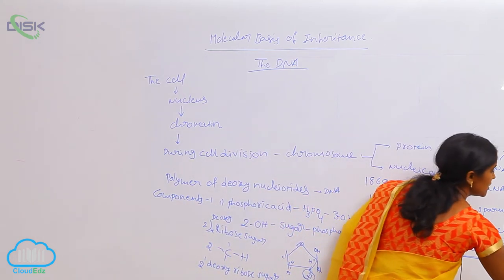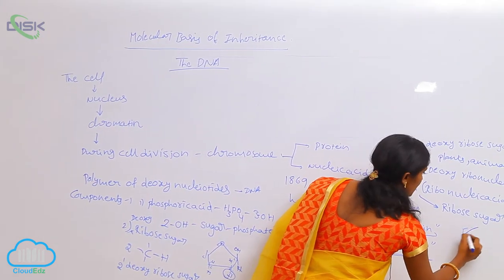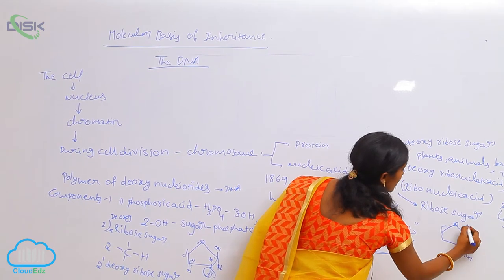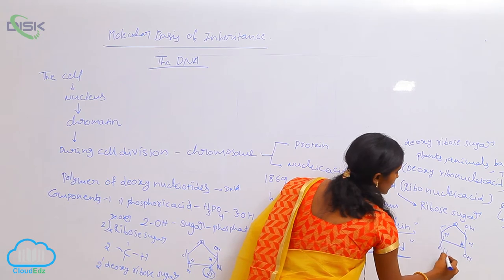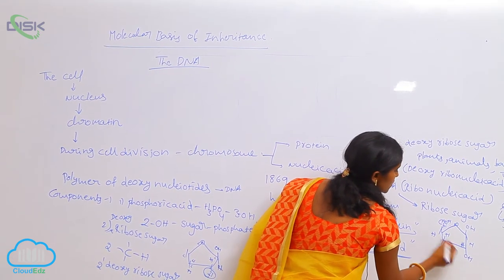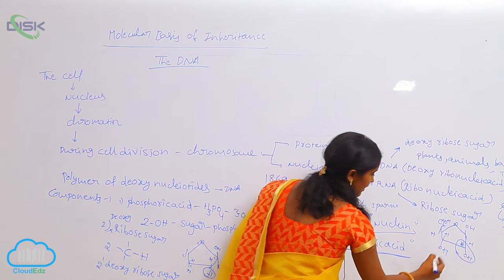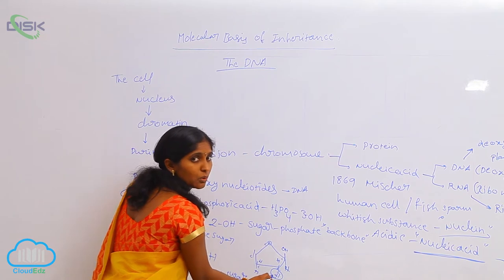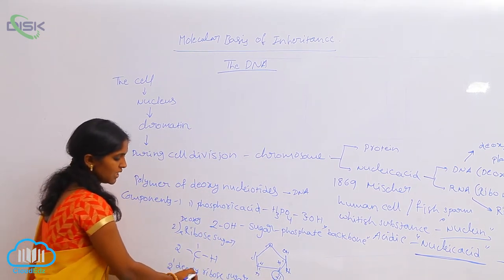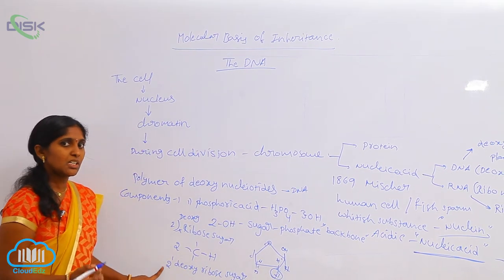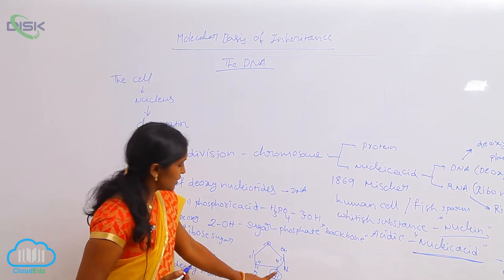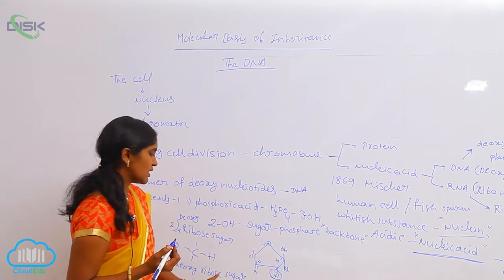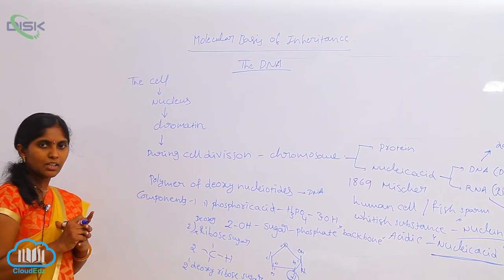In RNA, the sugar present is ribosugar, which has a full OH group at the second carbon. In deoxyribosugar, one oxygen molecule is absent at the second carbon. That is why we write it as 2-deoxyribosugar: '2-deoxy' indicates the location of the carbon where oxygen is lost. Because the second carbon lost one oxygen molecule, it is termed 2-deoxyribosugar, and this is one of the key components of DNA.